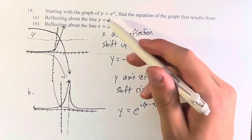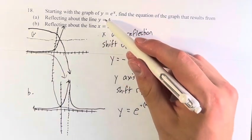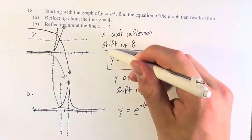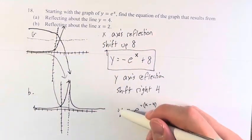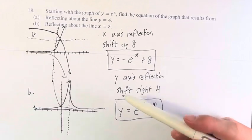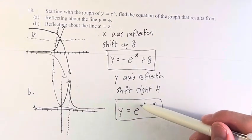So to take y equals e to the x and reflect about the line y equals 4, your equation is y equals negative e to the x plus 8. And to reflect about the line x equals 2, your line is y equals e to the negative x minus 4.